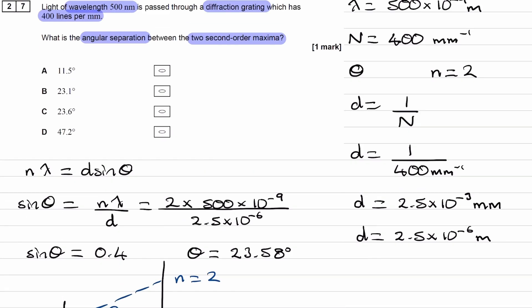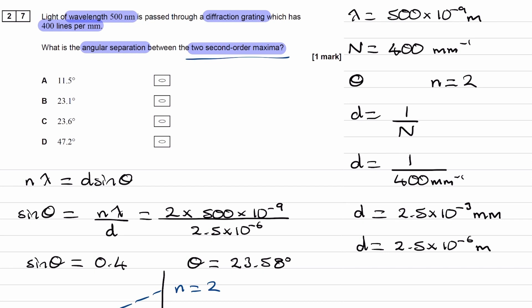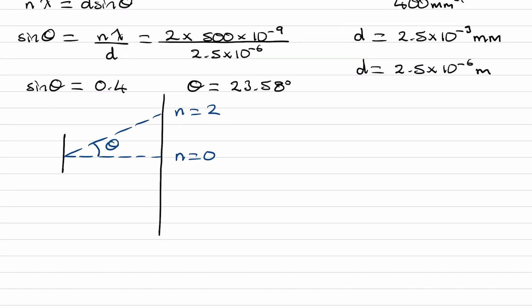We want the angle between the two second-order maxima. The second maxima would be on this side, symmetrically placed around n equals 0, and this angle would be the same. They'd both be 23.58 degrees.